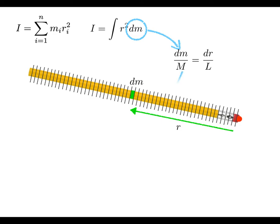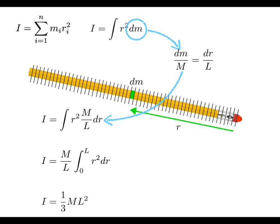Making that substitution, we now have something that can be integrated because M and L are constants — we're really integrating r² dr. The limits of integration are 0 to L, adding up all the r² dm contributions over the entire pencil from the axis of rotation out to the end. When you do that integration and simplify, you find that the rotational inertia of the pencil about its end is one-third ML².